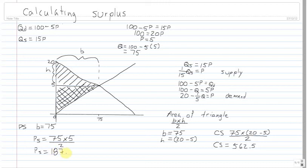Now let's think about total surplus. Total surplus is the joint area of these two curves combined. I'm going to flip over and take a new page. Here I am — I'm now looking for total surplus, which I'll abbreviate TS, and I'll do a quick freehand sketch of my graph again.